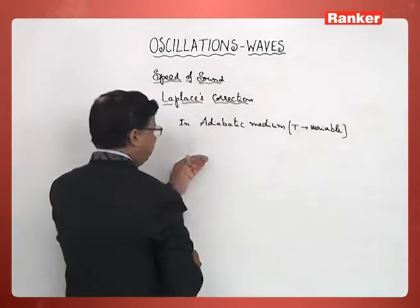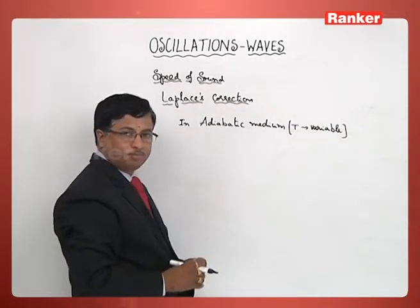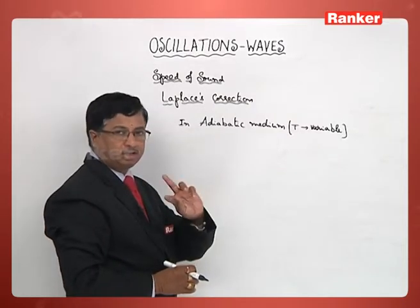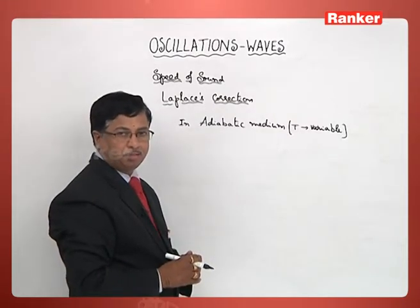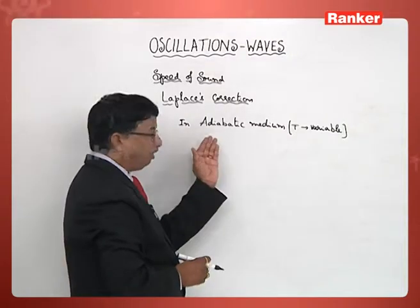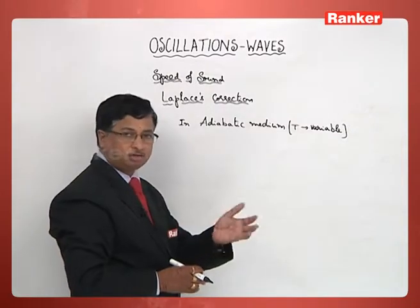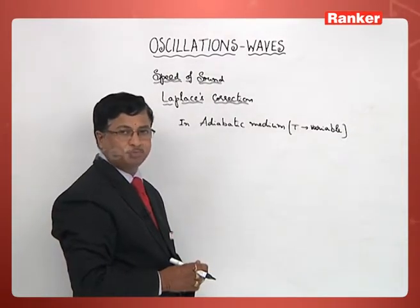Neither heat is taken by the system nor released to the surroundings. No exchange of heat is possible, but temperature is a variable. If it is an isothermal material medium, temperature remains constant. That is actually the major difference between these two.